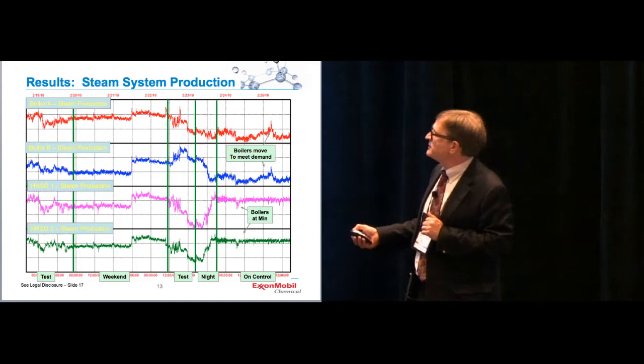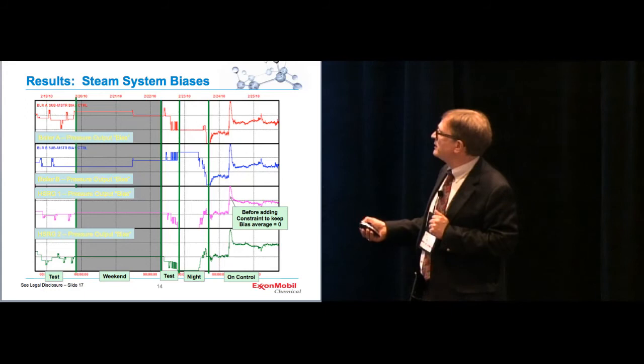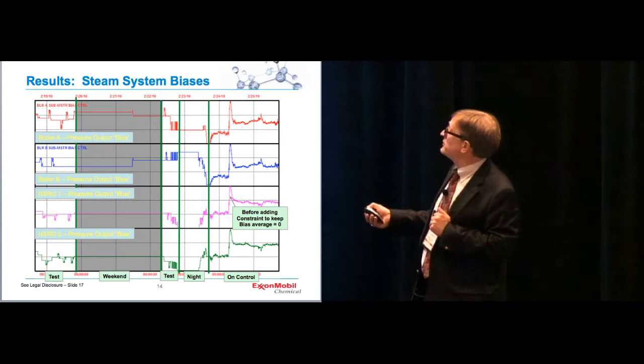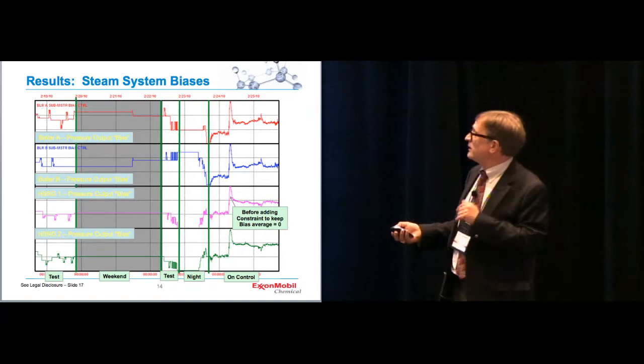This is the moves on the biases. Again, this is the automatic tester right here. The operators made a few moves while we were off during the weekend. We came back and did the automatic tester again. We're off here. We did a little more testing, and that was Tuesday morning, and then we put it on control here. You notice I didn't include that average bias. I learned the hard way when all the biases went up to near maximum. Realized we had to put a constraint in for that, but that's one of the things we did real quickly.